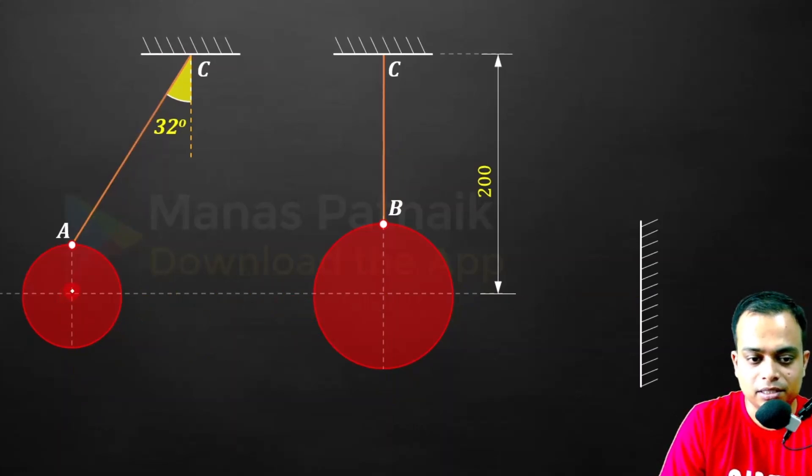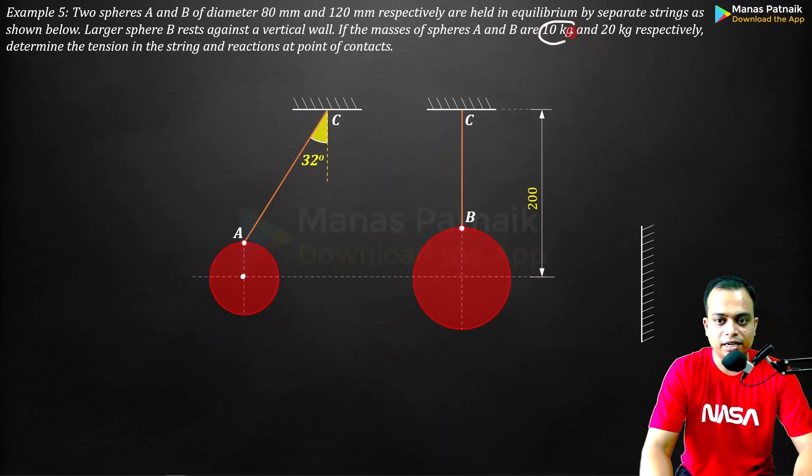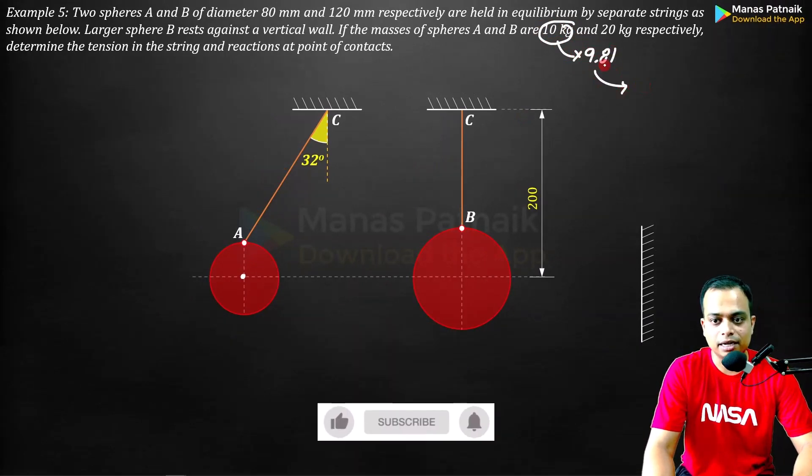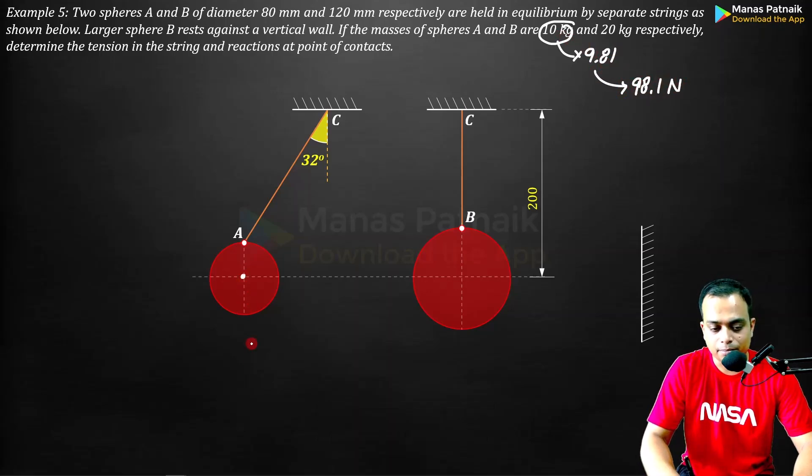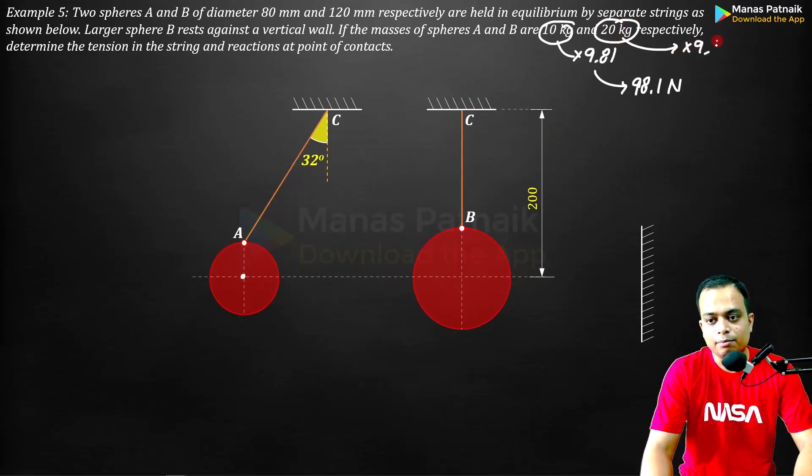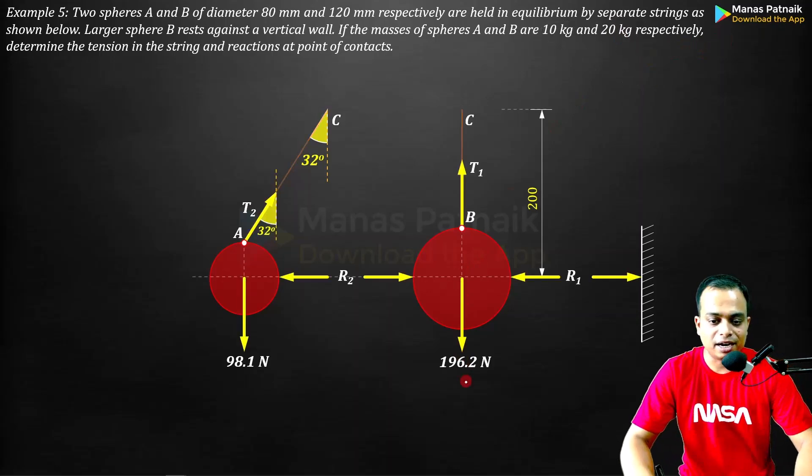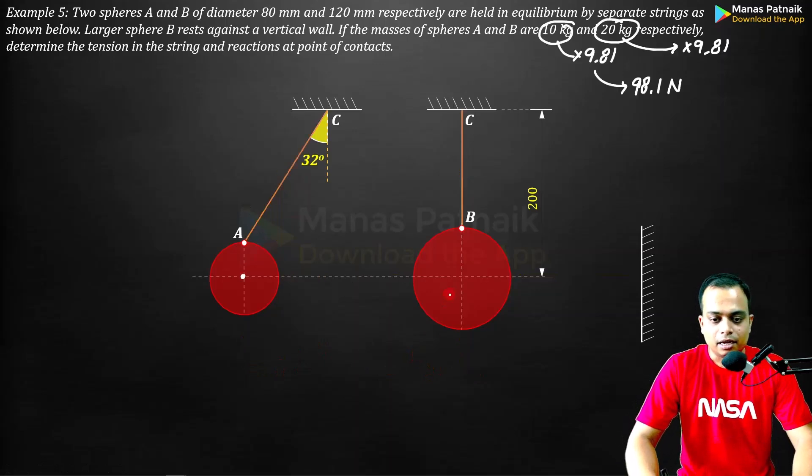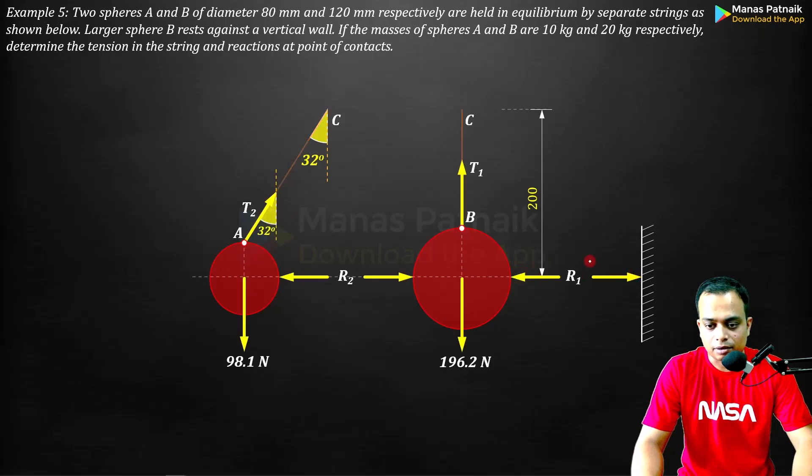Sphere A has a mass of 10. When you multiply it with 9.81 you get 98.1 Newtons. 20 can be multiplied by 9.81 and this gives you 196.2 Newtons. These are the corresponding weights. This is the action on the wall R1, and the wall will react with reaction R1.